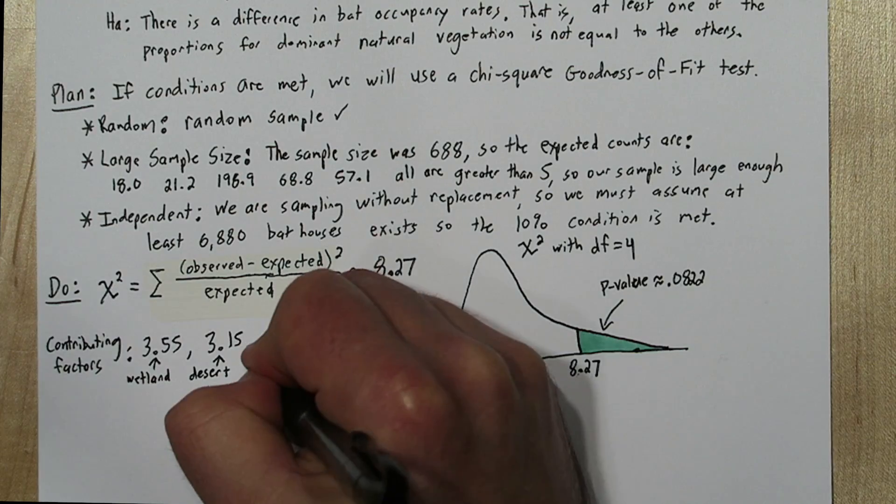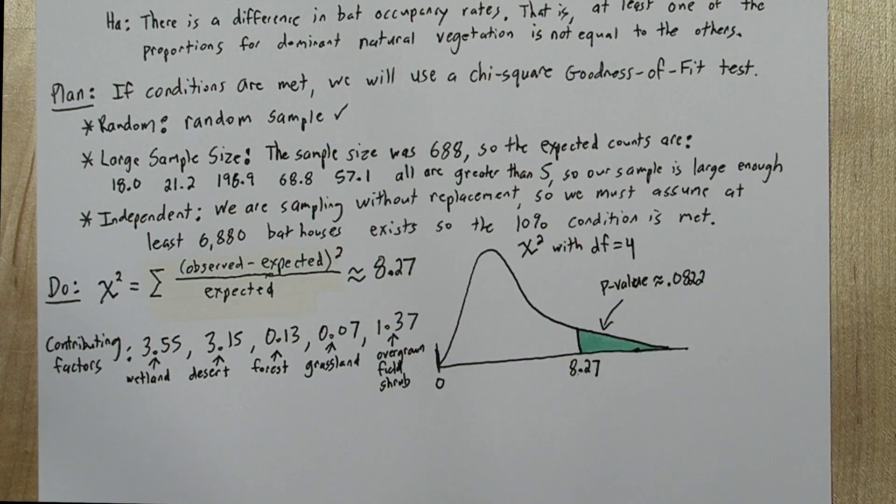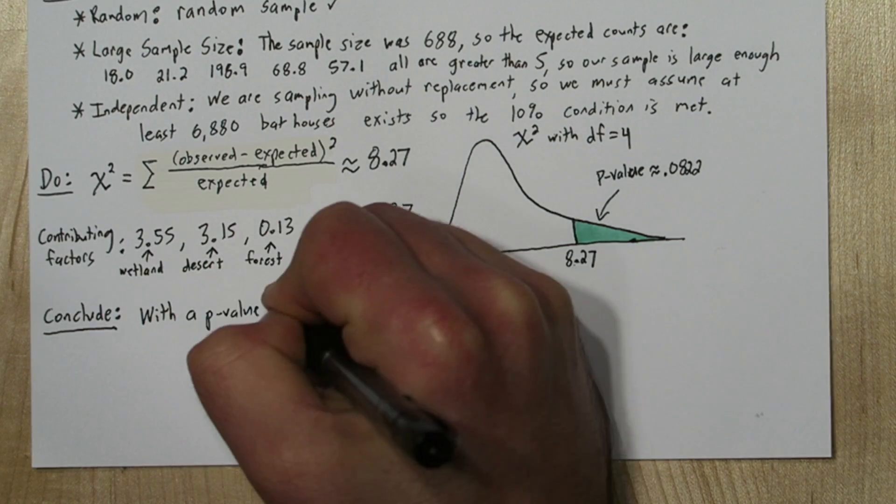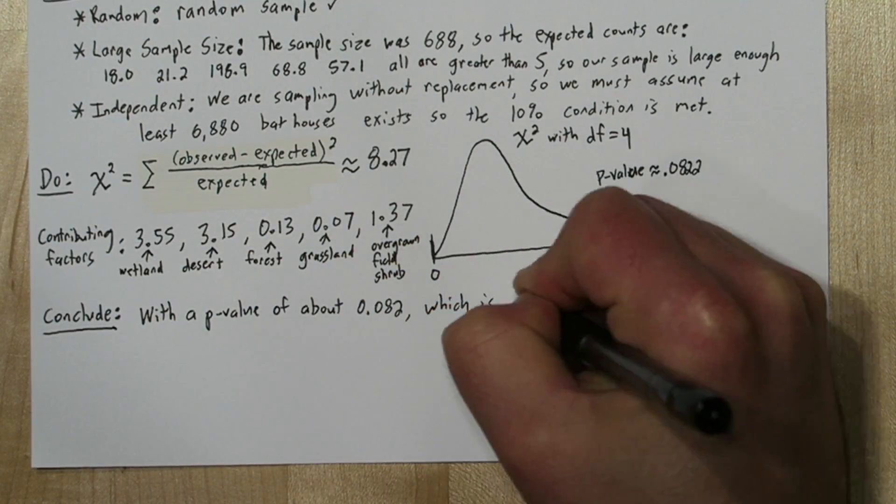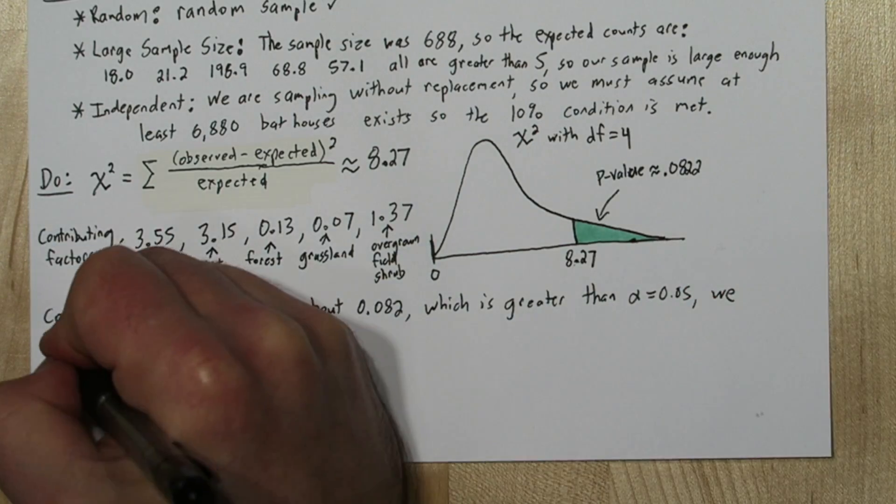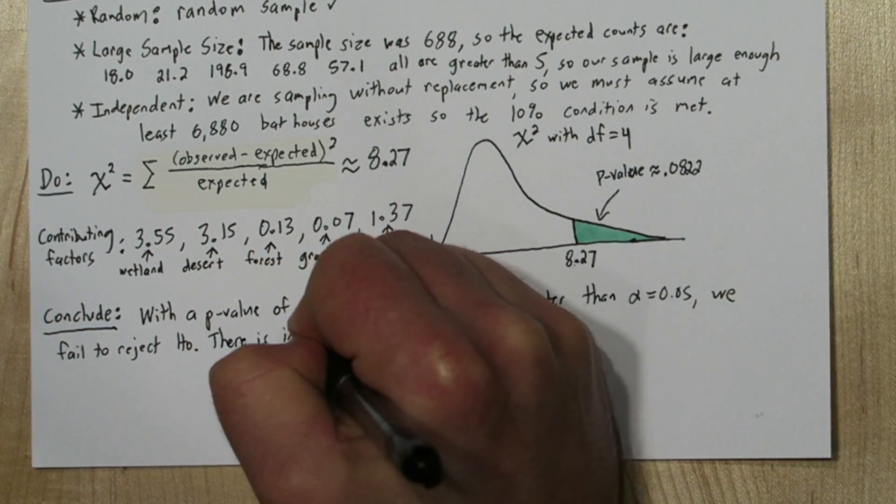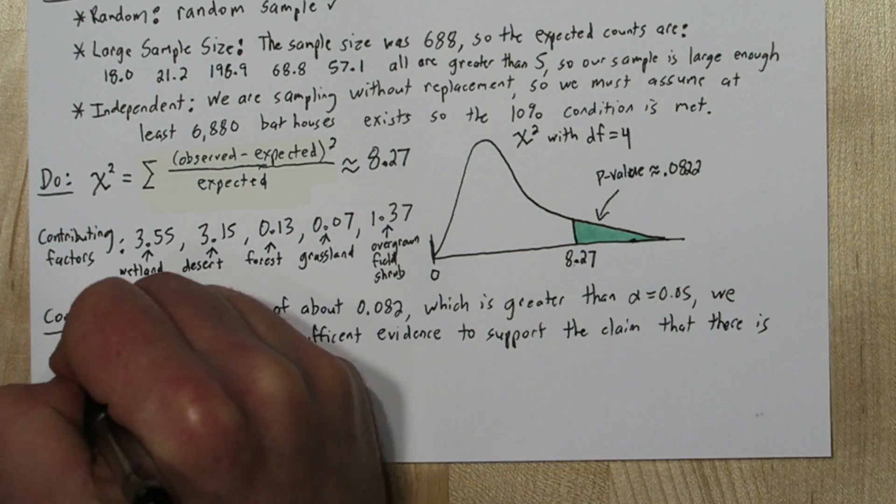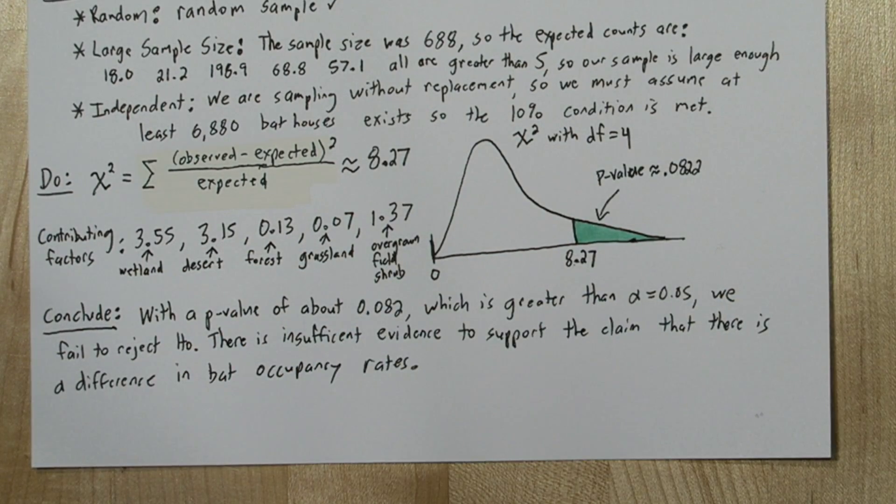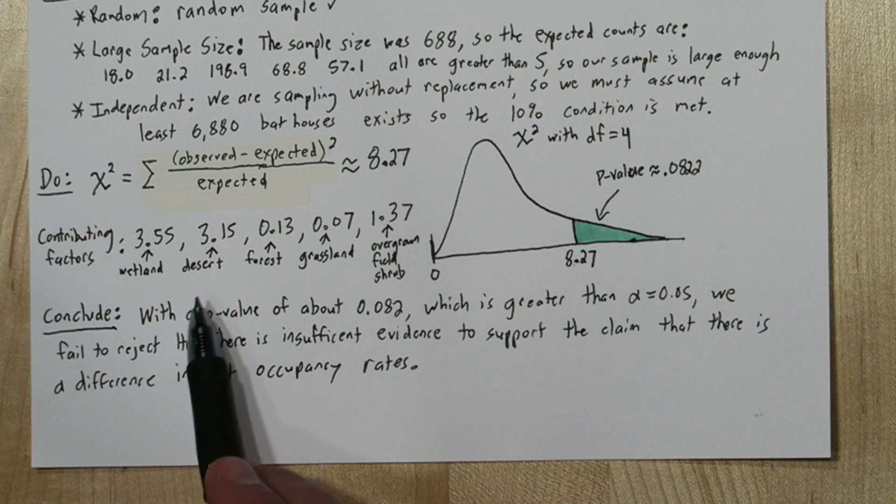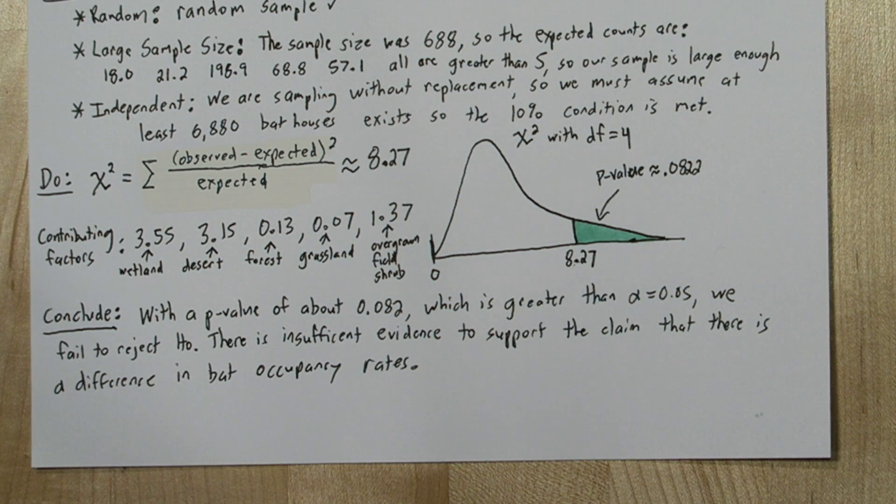So our five contributing factors represent the five dominant natural vegetations. For our conclusion we're going to say with a p-value of about 0.082, which is greater than alpha 0.05, we fail to reject the null hypothesis. There is insufficient evidence to support the claim that there is a difference in bat occupancy rates. Now if we look at our contributing factors, other than wetland and desert, these are all pretty small numbers, which means for forest, grassland, and overgrown field and shrub, the occupancy rates were pretty much what we expected. For wetland and desert, the occupancy rates were a little bit different than we expected. But overall all of this evidence wasn't enough for us to conclude there is a difference in bat occupancy rates.